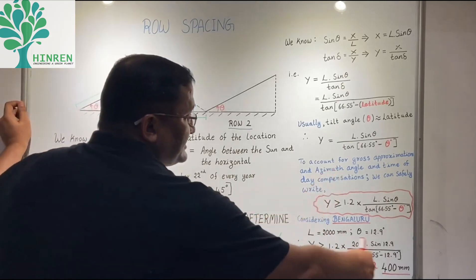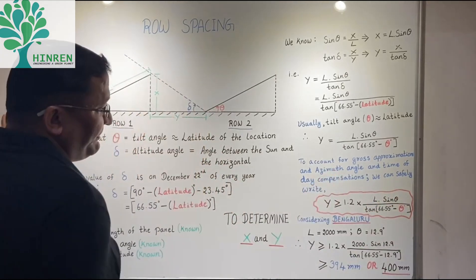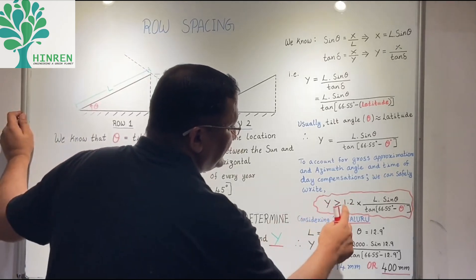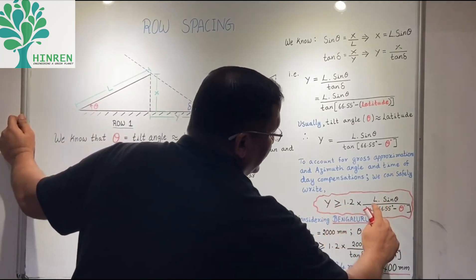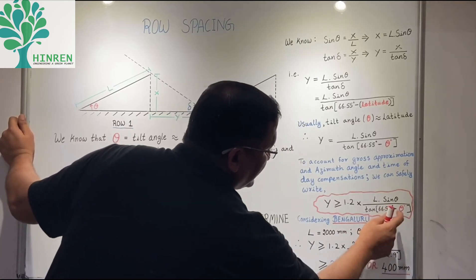This will be a very safe equation to use while determining the row spacing. We will say y greater than or equal to 1.2 times l sine theta divided by tan of 66.55 minus theta.